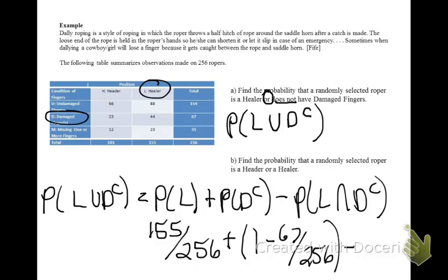For the last one, the probability that someone is a healer and does not have damaged fingers. So I'm looking at healers only, and out of these healers, I want to know how many do not have a damaged finger. Well, that's 88 plus 23 people out of 256. If you combine these fractions together, you'll come back with an answer of 0.83.